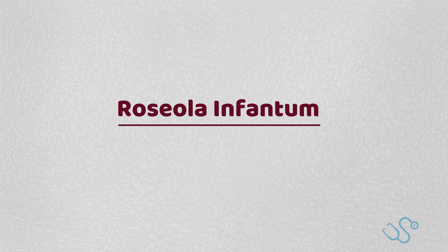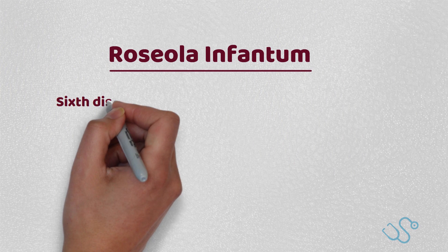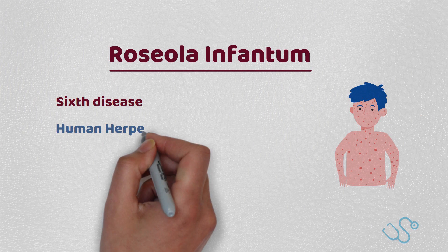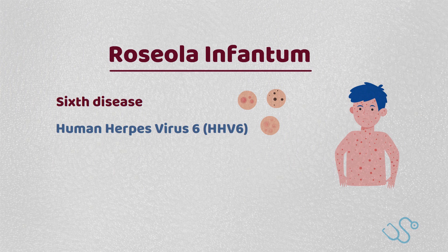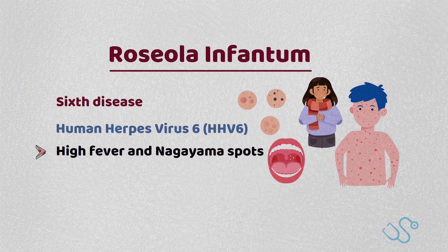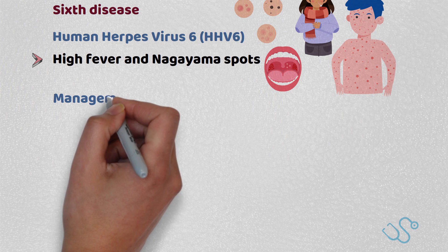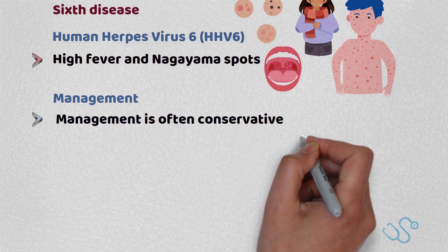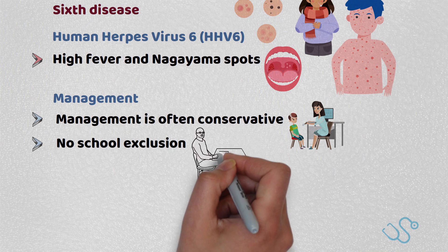Roseola Infantum, also known as sixth disease, is caused by human herpesvirus 6 (HHV6), which presents in young children with high fever and classic Nagayama spots — papules on the uvula and soft palate. Although it's self-limiting, patients may in serious cases develop febrile convulsions, meningitis and hepatitis. Management is often conservative with no school exclusion necessary.